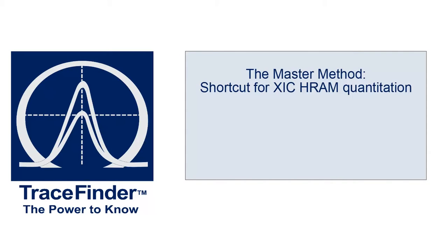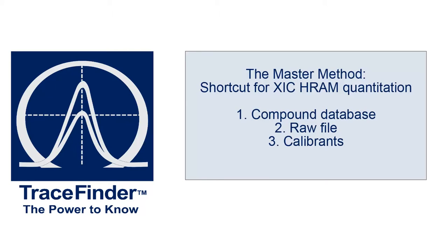TraceFinder is a centralized software for data acquisition and analysis. A shortcut for creating a method to do Orbitrap Extracted Ion Chromatogram High Resolution Accurate Mass Quantitation may be facilitated by importing data from external sources. In this video, we'll create a new master method by autofilling compound information, Orbitrap data, and calibrant information for rapid, targeted method development.